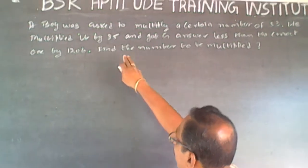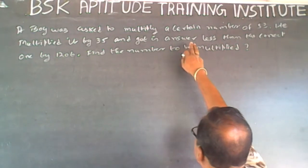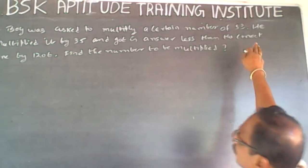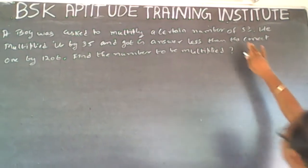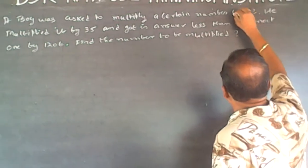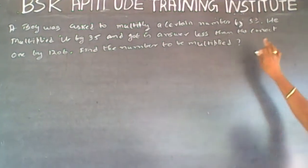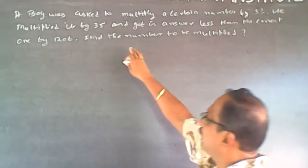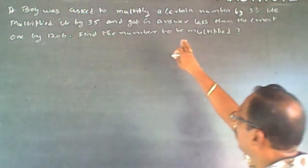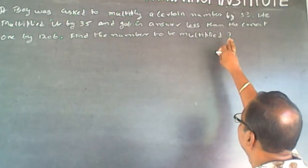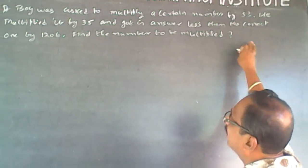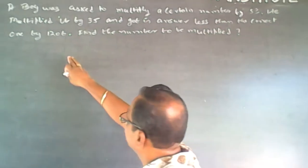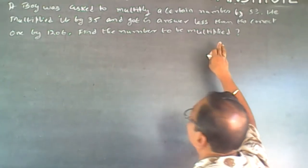The question is, a boy was asked to multiply a certain number by 53. He multiplied by 35 and got an answer which is less than the correct answer by 206. Find the number to be multiplied.